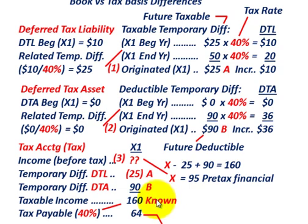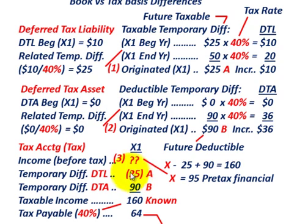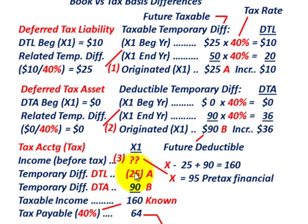We also determined what our temporary difference is related to the deferred tax liability — we originated $25,000 for the year. That's a deferred taxable amount, and it's going to be a reduction from our income before taxes, because we're taking the tax deduction now but it'll be a future taxable amount in coming years. And the temporary difference for our deductible temporary difference — originated for the year at $90,000 — relates to our deferred tax asset.